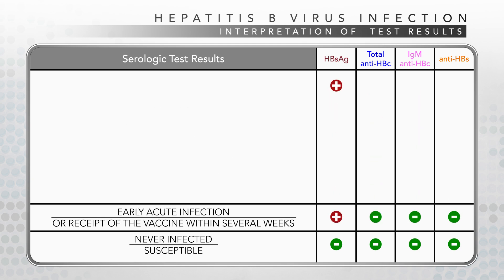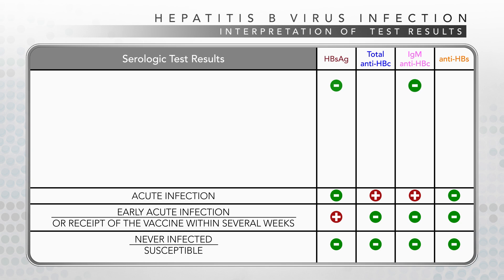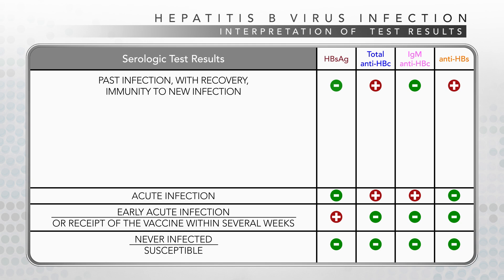Positive HBsAg, total anti-HBc, and IgM anti-HBc with negative anti-HBs indicates acute infection. As acute infection resolves, HBsAg will disappear, and before anti-HBs appears, both HBsAg and anti-HBs will be negative while total anti-HBc and IgM anti-HBc will be positive. Negative HBsAg and IgM anti-HBc with positive total anti-HBc and anti-HBs indicates past infection with recovery and immunity to new infection.